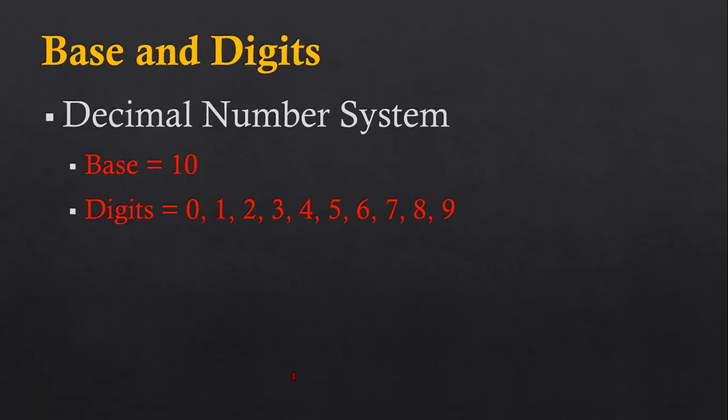The next number system is decimal, which is the commonly used number system for mathematical calculations. We use decimal in schools and colleges. The digits are zero to nine, so counting them gives ten, and the base of the decimal number system is ten.